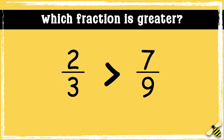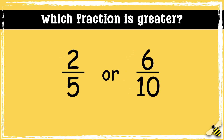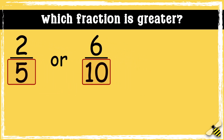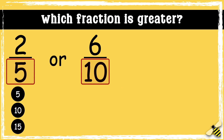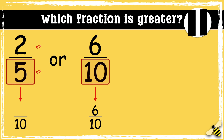Now it's your turn. Which fraction is greater: 2 fifths or 6 tenths? Remember, we need to make the denominators the same to be able to compare them. Let's have a look at the multiples of 5 and 10 and find the lowest common multiple. I can see that 10 is the lowest common multiple, so we can make both the denominators 10. What do we need to multiply 5 by to make 10? Multiply the numerator by that number to find the equivalent fraction. Pause the video to give yourself time to work out the answer.